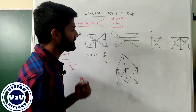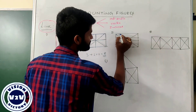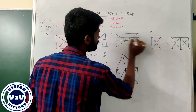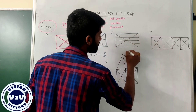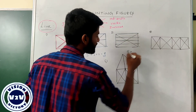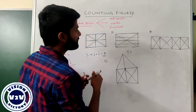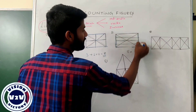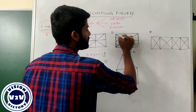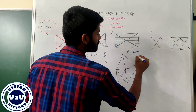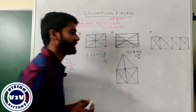For the third question, the total number of horizontal lines: you have one, two, three, four, five — the number of horizontal lines are five. For the vertical, we have two vertical lines. And again, we have two inclined lines. The total number of lines in this figure is equal to nine.